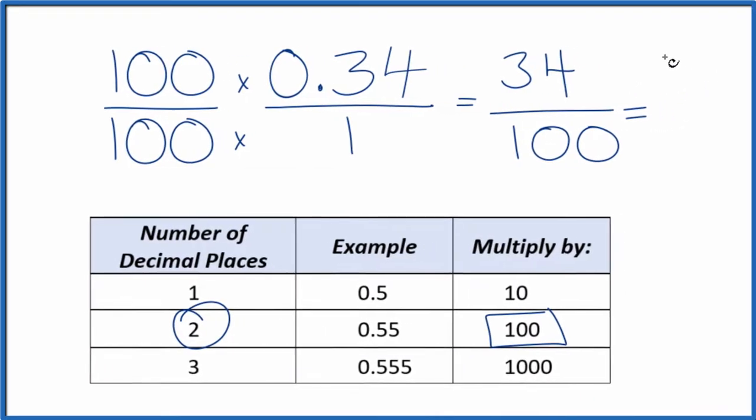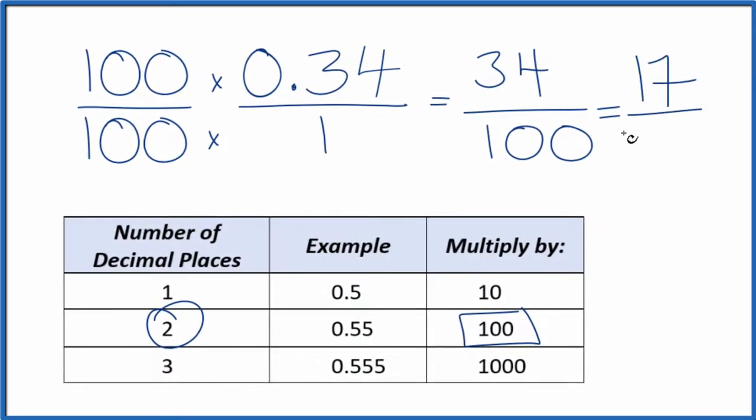If we divide 34 by 2, we get 17. If we divide 100 by 2, we get 50. So in lowest terms, the fraction would be 17/50, and we can't reduce this any further.